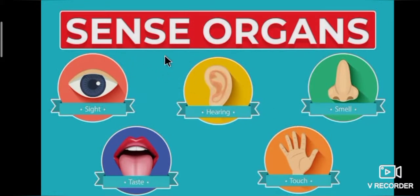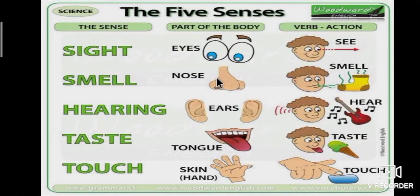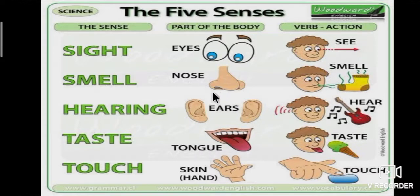Now we are going to learn about sense organs. Sense organs are like the windows to the outside world. There are five sense organs in our body: eyes, nose, ears, tongue and skin. They make us aware of our surroundings. We are able to see, smell, hear, taste and touch only through sense organs.